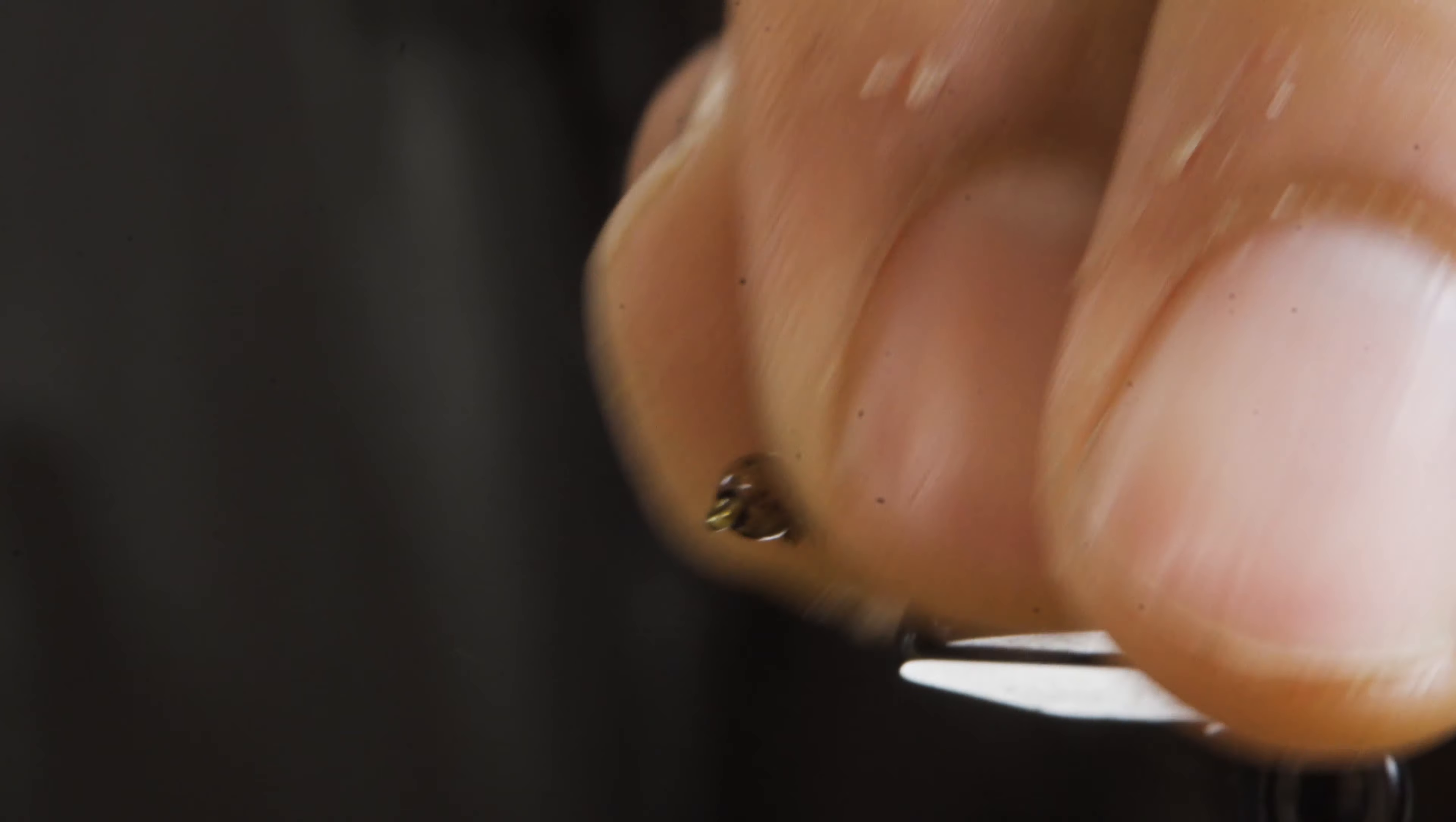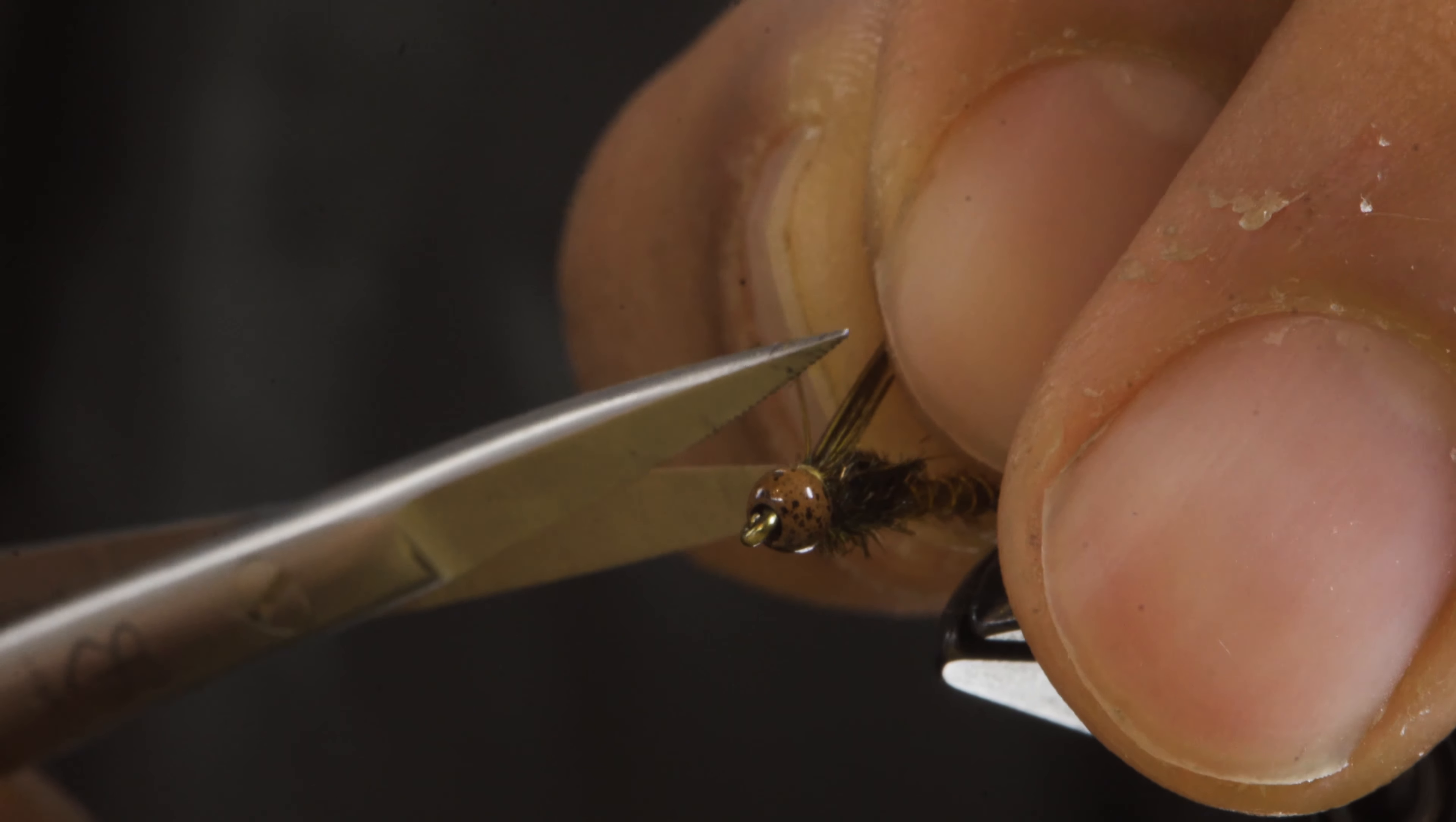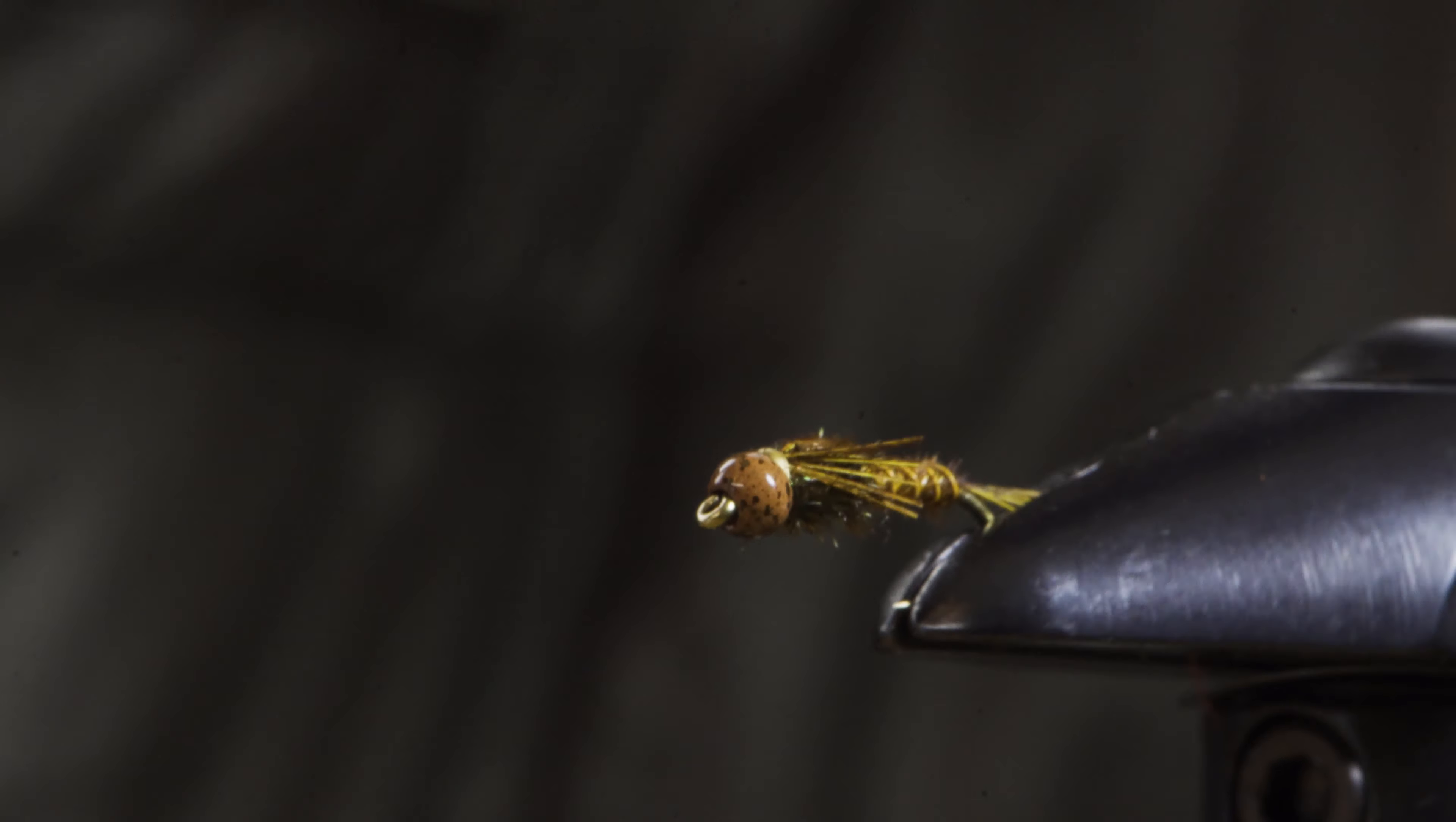Now, the last part of this fly is cutting the leg to an appropriate size. What I like to do is go right behind my peacock hurl thorax, take my tails together and give it a nice even snip. Some of those will escape. So just clean it up and then bring those fibers back to the side to relieve wire.